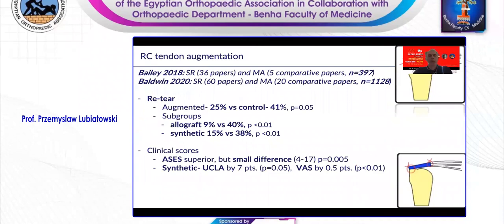We've seen from a number of studies — including recent meta-analysis and systematic review over 1,000 cases — that if we use augmentation, we may anticipate a decreased rate of re-tears: 25% versus 41% when there is no augmentation applied. It works well both for allograft membranes and synthetic membranes. There is also clinical improvement over time with patients when augmentation has been used, however the difference is not very significant.